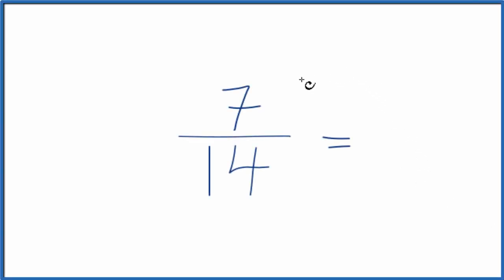If you need to find equivalent fractions for 7/14, here's how you do it. What we want to do is find other fractions that are equal to 7 divided by 14. They have the same value, just that their numerator and denominator are different.